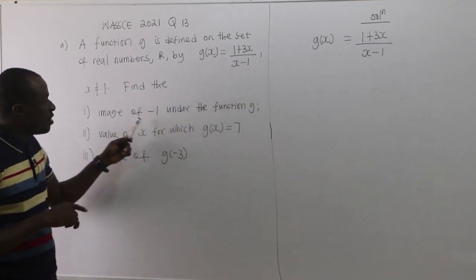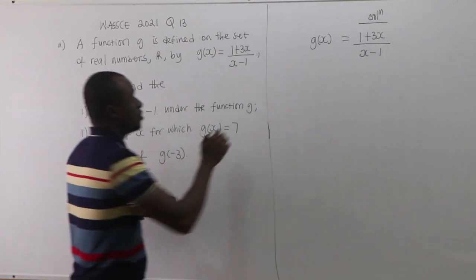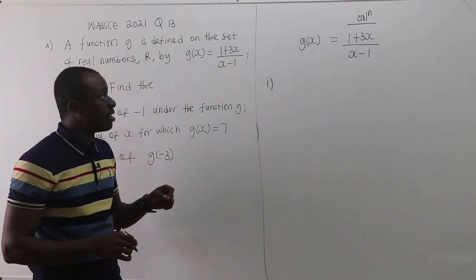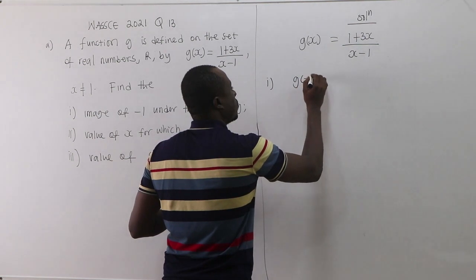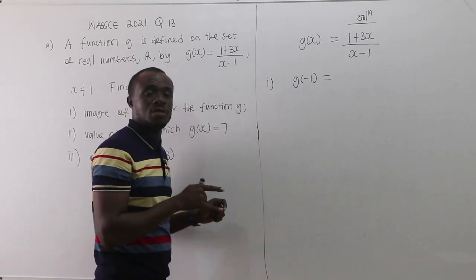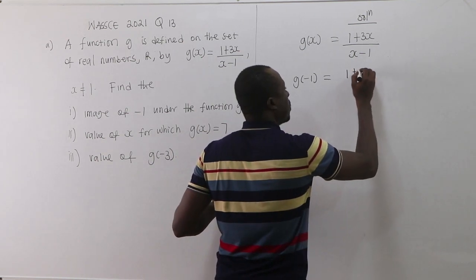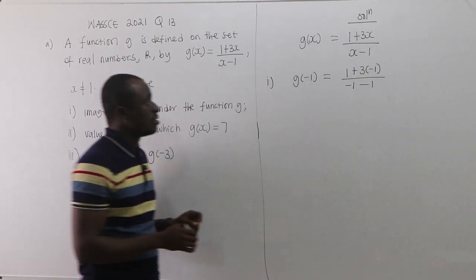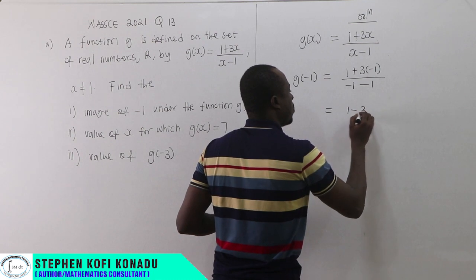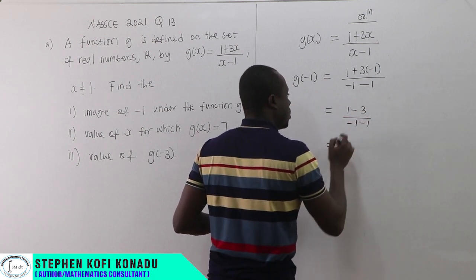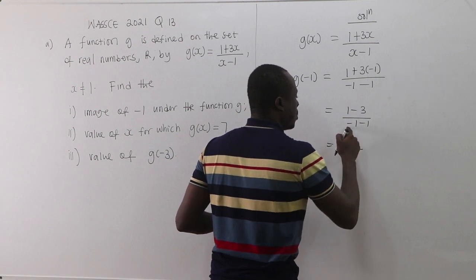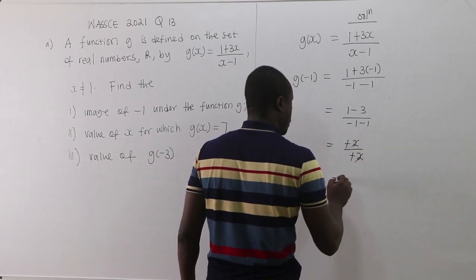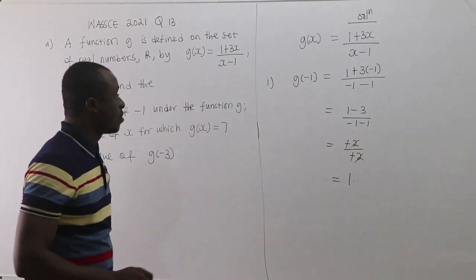Find the first image of negative 1 under the function G. The image of negative 1 under G means when x is negative 1, what do we get? So G(-1): wherever we see x, we put negative 1. That gives us (1 + 3(-1)) / (-1 - 1) = (1 - 3) / (-1 - 1) = (-2) / (-2) = 1. So our answer is 1.